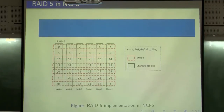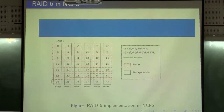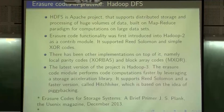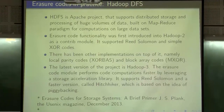RAID 6 in NCFS follows the same structure but with different equations for the two parity symbols — the checksum is deliberately moved to different nodes across stripes, permuted so that each node holds both data and parity fractions across different stripes, improving resilience and balance.